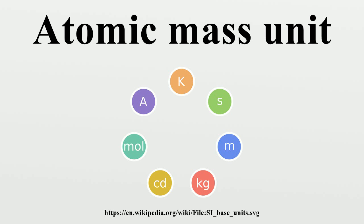Masses of proteins are often expressed in Daltons. For example, a protein with a molecular weight of 64,000 g/mol has a mass of 64 kDa. A hydrogen-1 atom has a mass of 1.00782503207 u. By definition, a carbon-12 atom has a mass of exactly 12 u. A molecule of acetylsalicylic acid has a mass of 180.16 u. Titin, the largest known protein, has an atomic mass of 3–3.7 megadaltons.